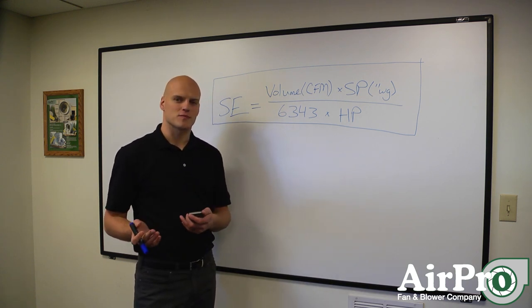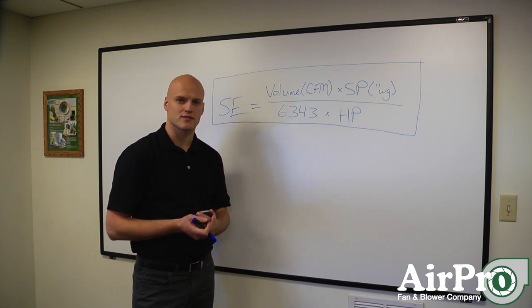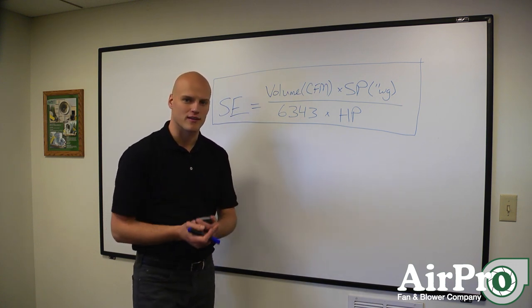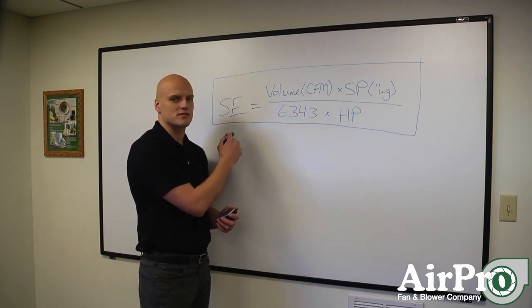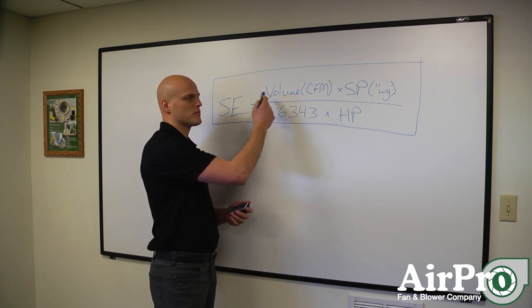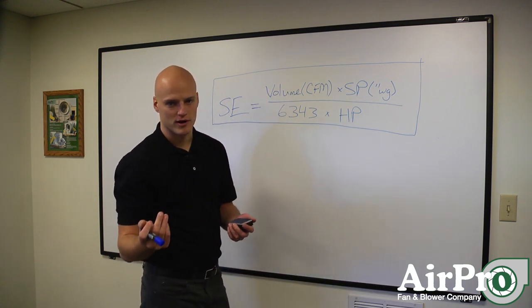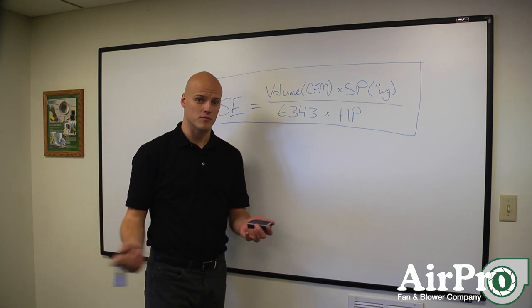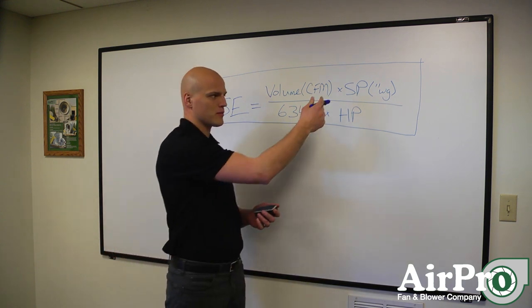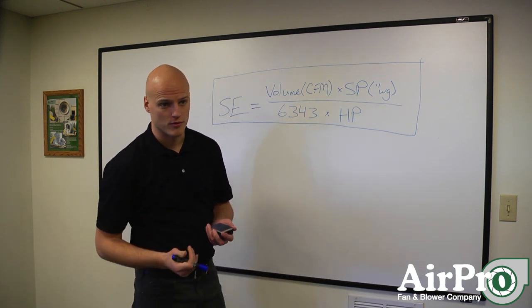Well we're going to start just by going through what the equation for static efficiency is so you can see how it ties to your fan. So static efficiency is the product of your volume and your pressure. Volume is how much air you want to move through your fan. Static pressure is how much resistance you want that volume to be able to fight through.